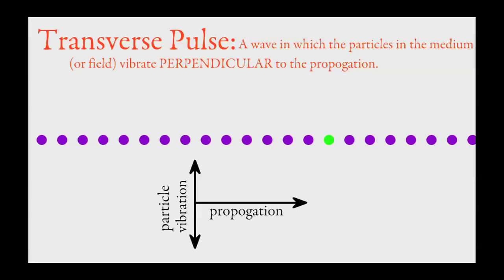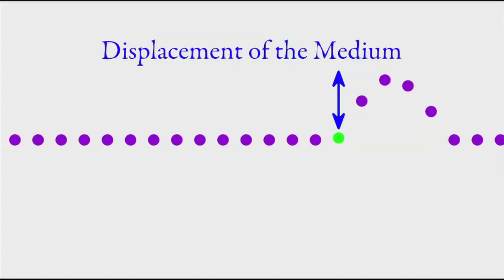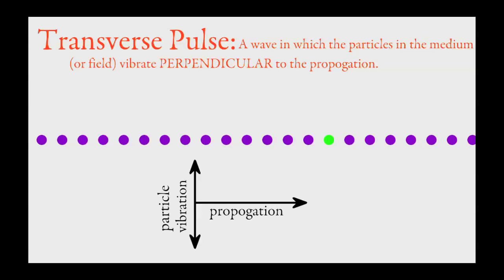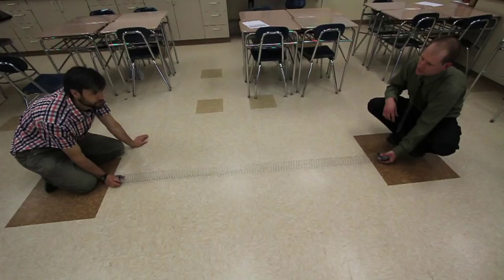Here, the displacement of the medium is up and down. A transverse pulse is a wave in which the particles in the medium vibrate perpendicular to the propagation.